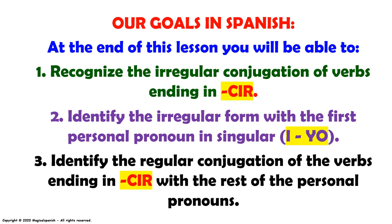Our goals in Spanish. At the end of this lesson, you will be able to: one, recognize the irregular conjugation of verbs ending in CIR; two, identify the irregular form with the first personal pronoun in singular, I (yo); three, identify the irregular conjugation of the verbs ending in CIR with the rest of the personal pronouns.